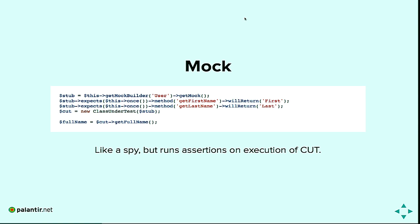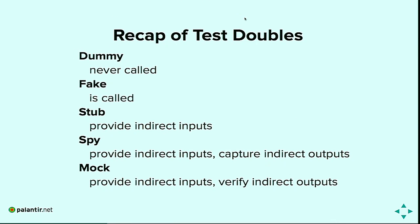Here's the recap. Does anyone have a question about these test doubles? A question from the audience: is a fake a consistent concrete class while stubs and mocks are created on the fly by your testing framework? Yes — in PHPUnit, a fake is a real concrete class you write yourself, like a fake file system class. The stub, spy, and mock in PHPUnit are created on the fly using get mock.